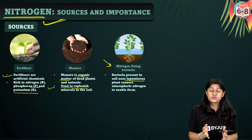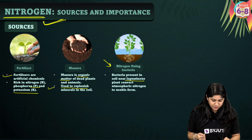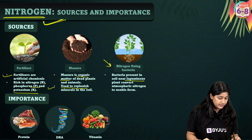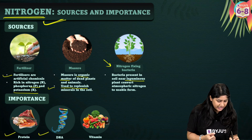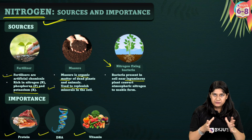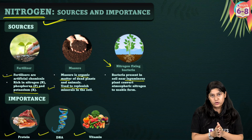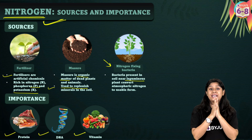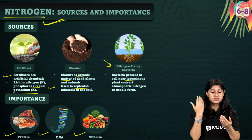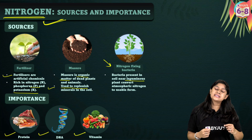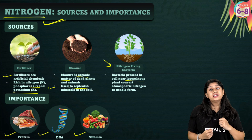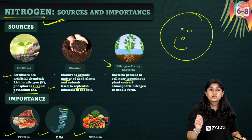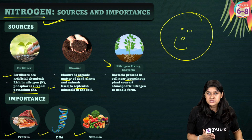Nitrogen plays a very important role in plants — it helps in protein synthesis, DNA and vitamins. All these nutrients are really very important for the growth of plants. This is a super important topic, so please make sure to have a note of it.